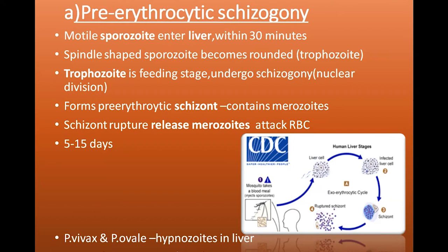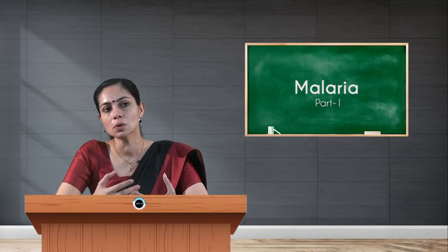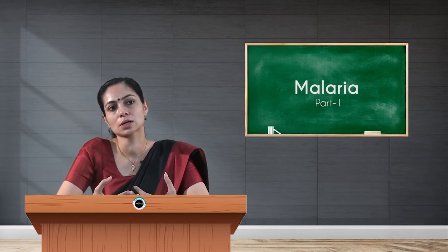The first stage, pre-erythrocytic schizogony, happens when the parasite enters the liver within 30 minutes after the mosquito bite. The spindle-shaped sporozoites enter the liver and become rounded — that stage is called the trophozoite, which is a feeding stage. It undergoes schizogony, forming merozoites when the schizont ruptures. The whole process takes 5 to 15 days.